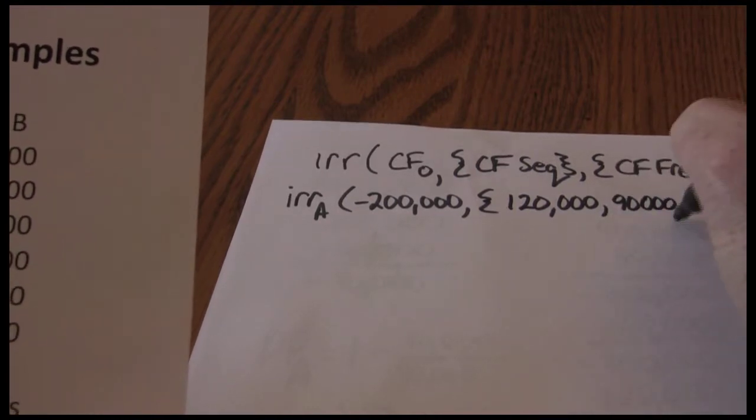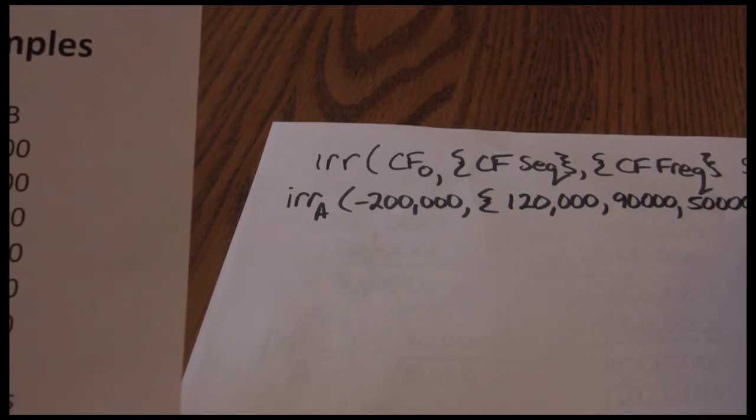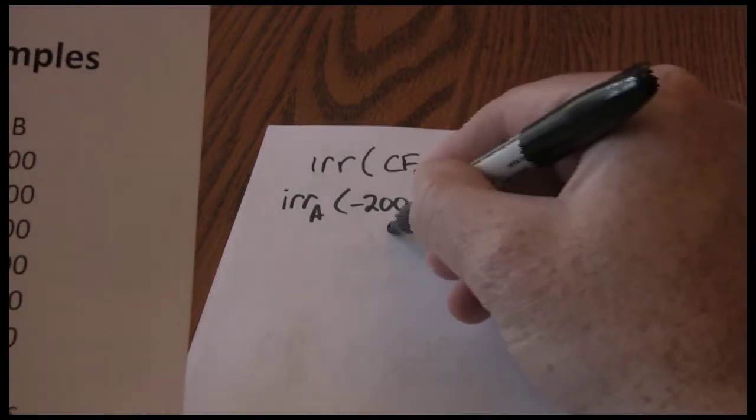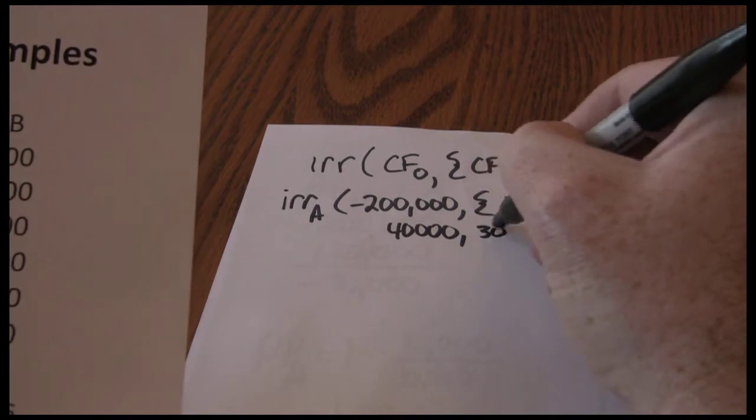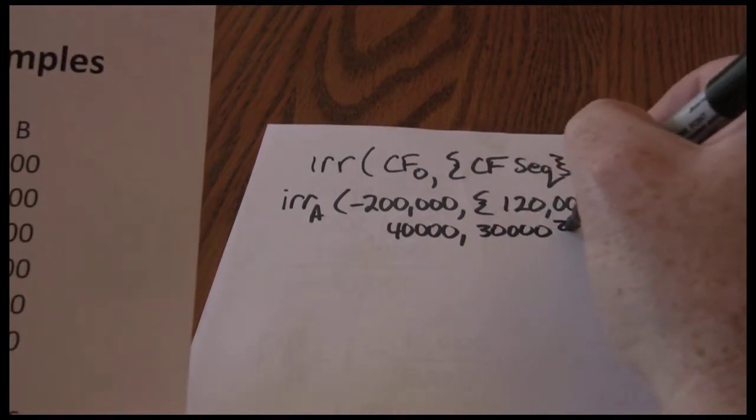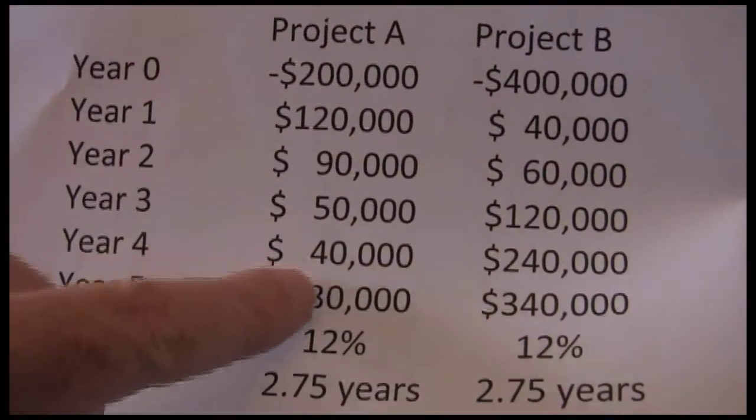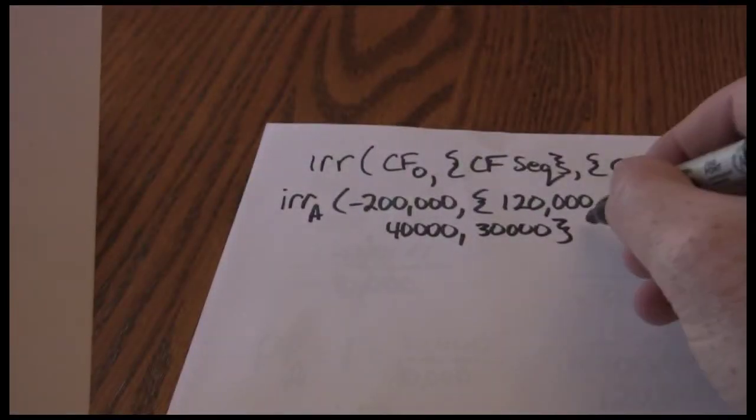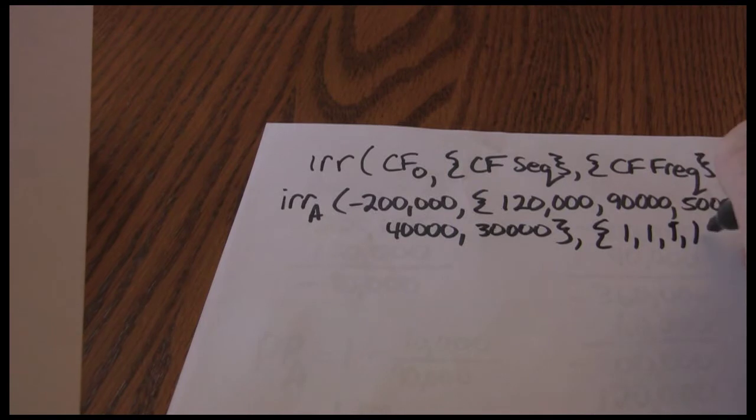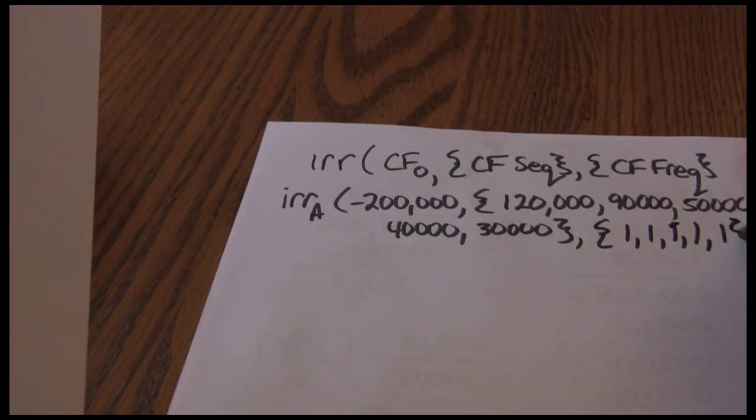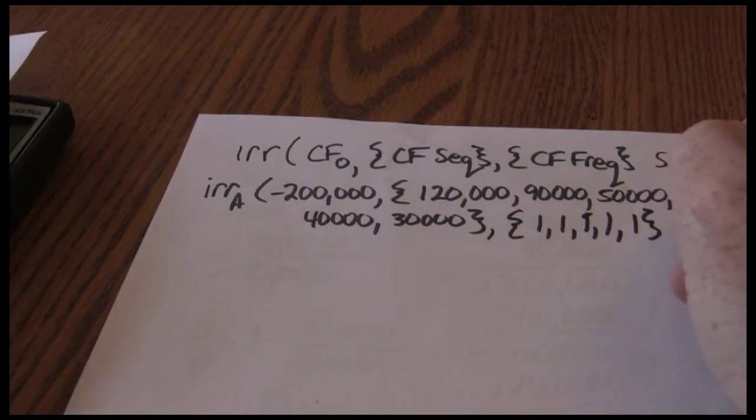And the cash flow sequence happens. And then the frequency. None of these cash flows happens for more than one time period, so our frequency are just ones. Since there are five cash flows, we have a sequence of five ones. And then we can solve.